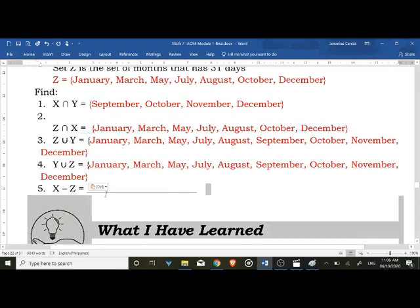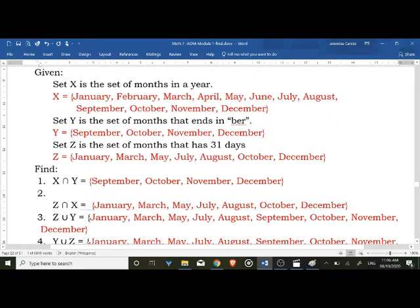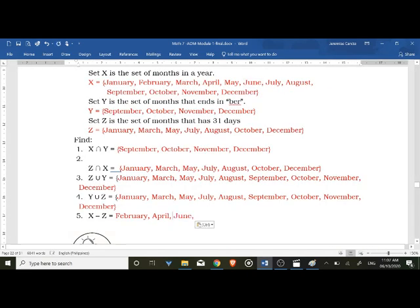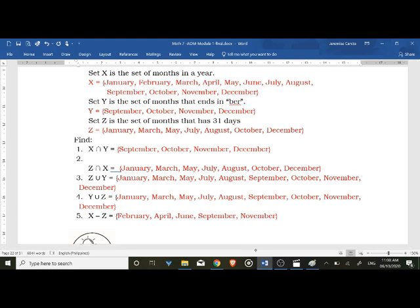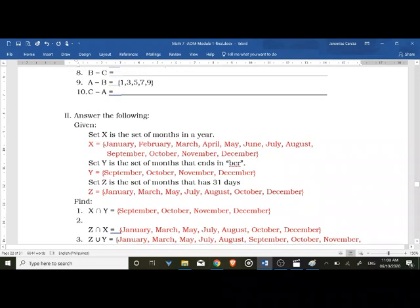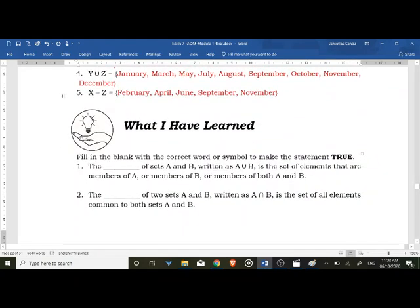Number five: X minus Z. Si X i-subtract po natin ng elements na nandun kay Z. So sino po ang matitira? Si February, si April, si May - hindi, wala si May. Si June wala si June kay Z. Si August meron. Si September, si October meron. Si November wala. So these are ito po yung difference ng Z from X. So number five sagot po natin ay set with elements February, April, June, September, and November. So check nyo lang po yung answer key po natin. So importante po alam nyo na kung paano po nakuha ang mga sagot na niyan.